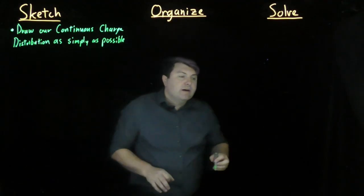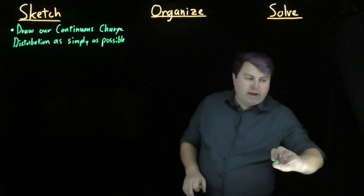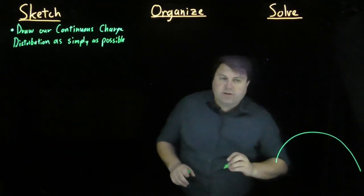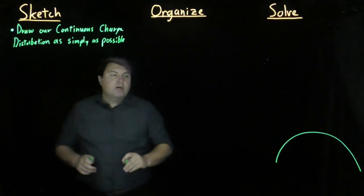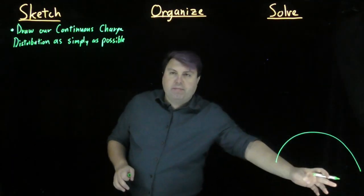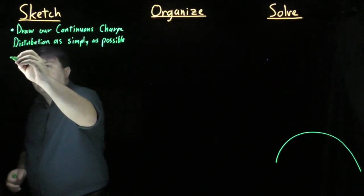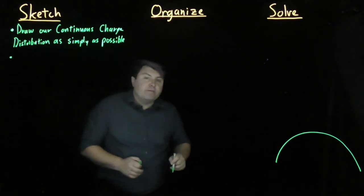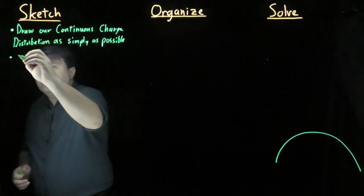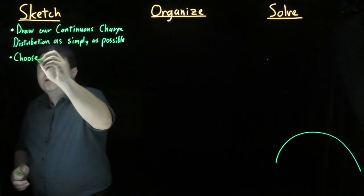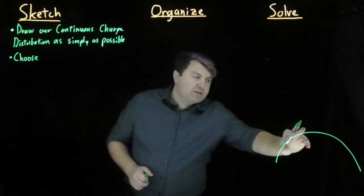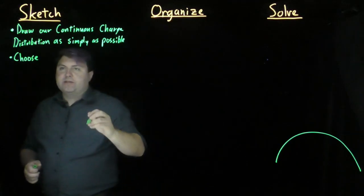In this case, we'll look at a semicircular arc of charge. We would want to draw this as a one-dimensional arc, a one-dimensional line, and then what we want to do is choose how to build up this arc out of smaller pieces.